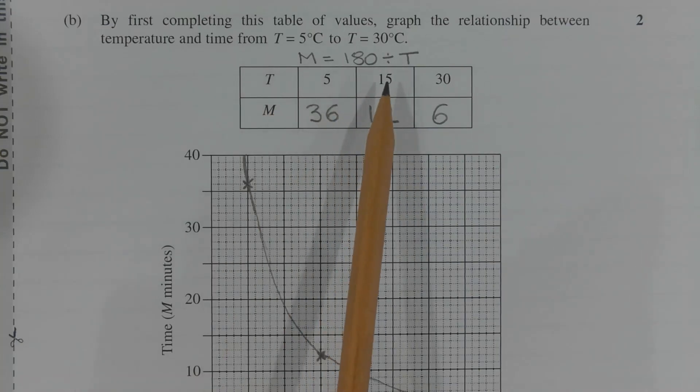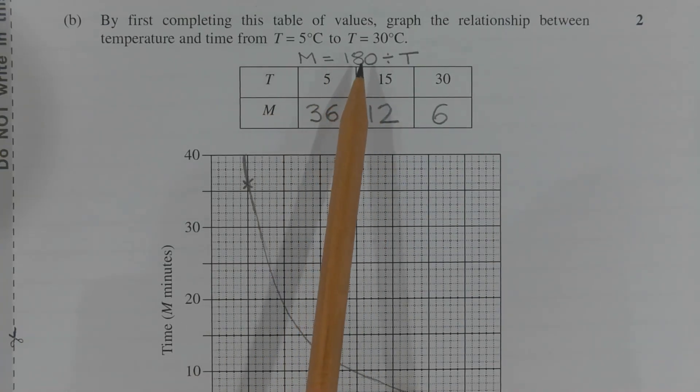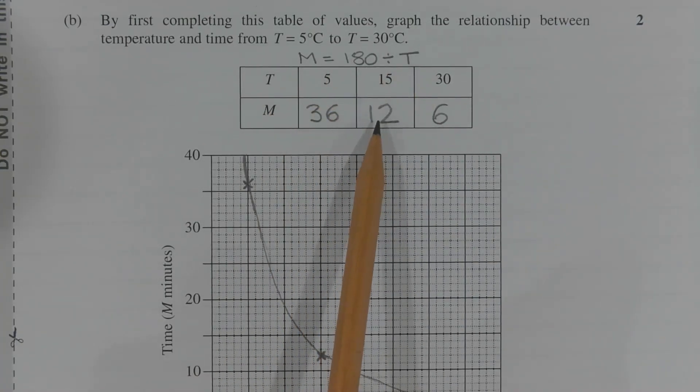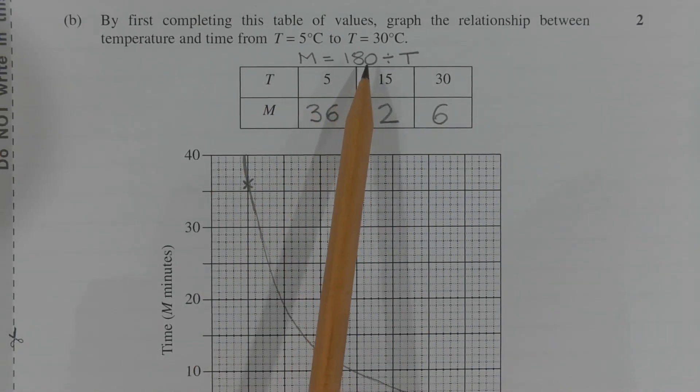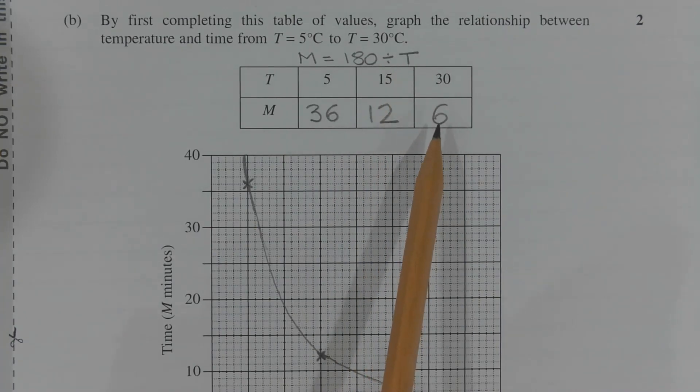When T equals 15, m is equal to 180 divided by 15, which equals 12. And when T equals 30, m is equal to 180 divided by 30, which equals 6.